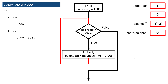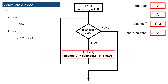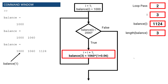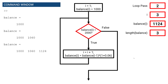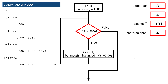Once we've calculated our new balance, we have two elements inside of our balance array. We return to our logical expression, and again the second element in our array balance does have a value less than $2,000, so that statement is true and we begin our second loop pass. Once again, we increase our array index by one so that we can store the next year's balance in the third element of the array, corresponding to the initial balance, the balance at end of year one, and end of year two.